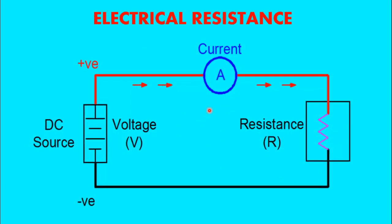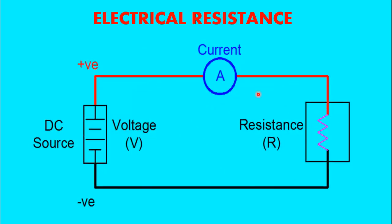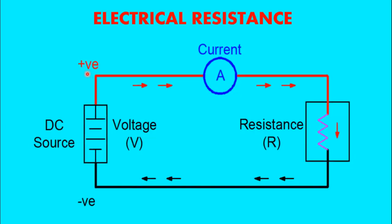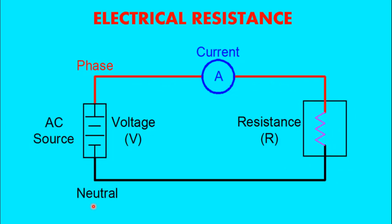Here you can see the animated image of an electrical circuit. This is a very basic circuit which consists of a voltage source — a DC source in this case — and a resistance, with wires or conductors that allow the current to pass through. When talking about a DC source, we use the terminology positive and negative voltage terminals, whereas for an AC source we use the terminology phase and neutral, or line and neutral.